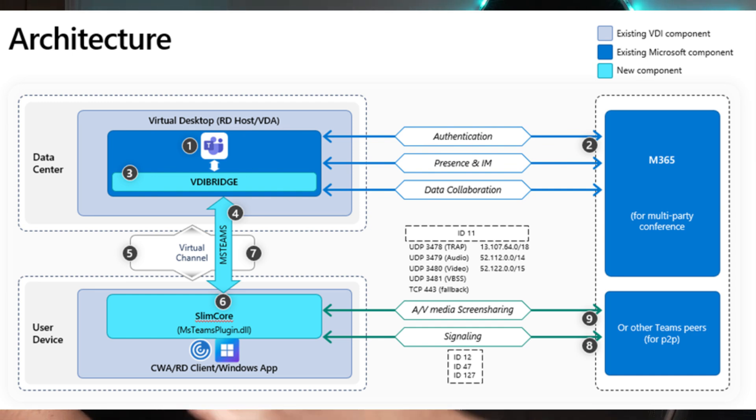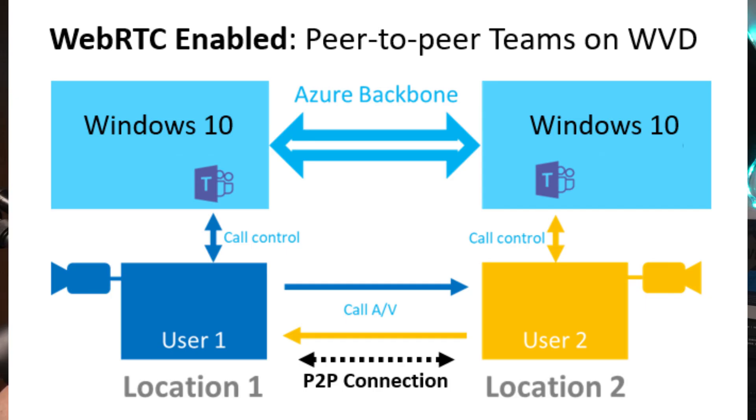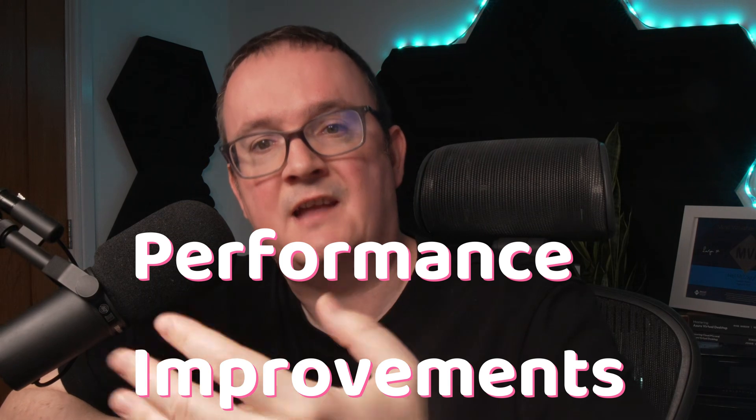So what is Teams Slim Core? Teams Slim Core is a new — or rather existing — media engine that was already present for the physical version of Teams, and it's now been piped into the VDI version of Teams. Historically we relied on WebRTC for Microsoft Teams, and we now have full Slim Core support. Because we're using the existing engine that was used in the physical client, we're going to get much better feature parity.